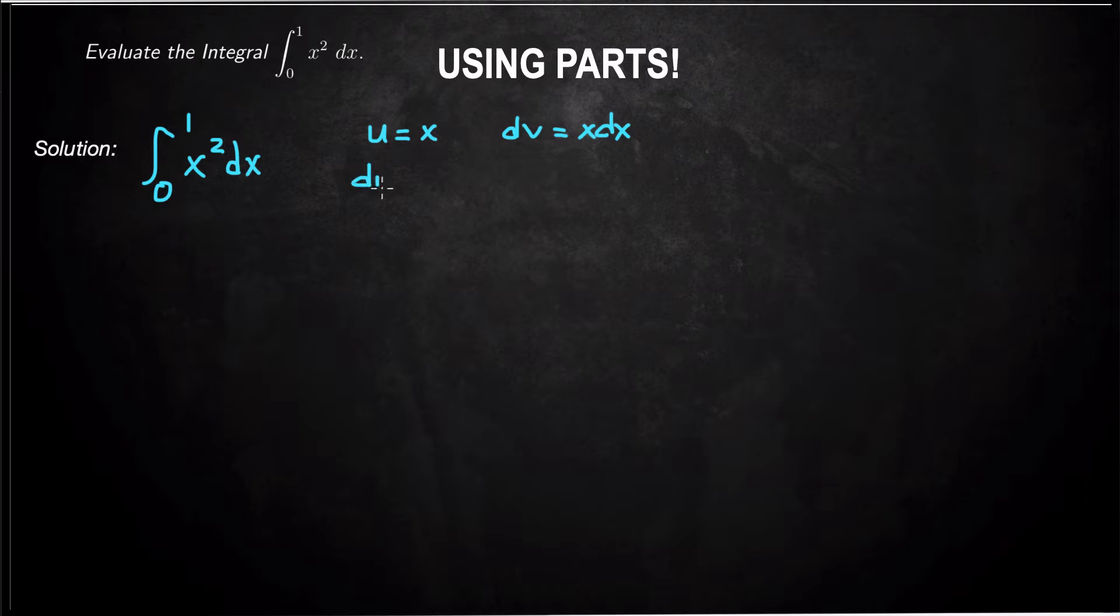So du, the derivative, is just going to be dx, and v is going to be 1 half x squared. So yeah, we did use the power rule, but we did not use the power rule on x squared. We only used it on x here. So let's see what this gives us.